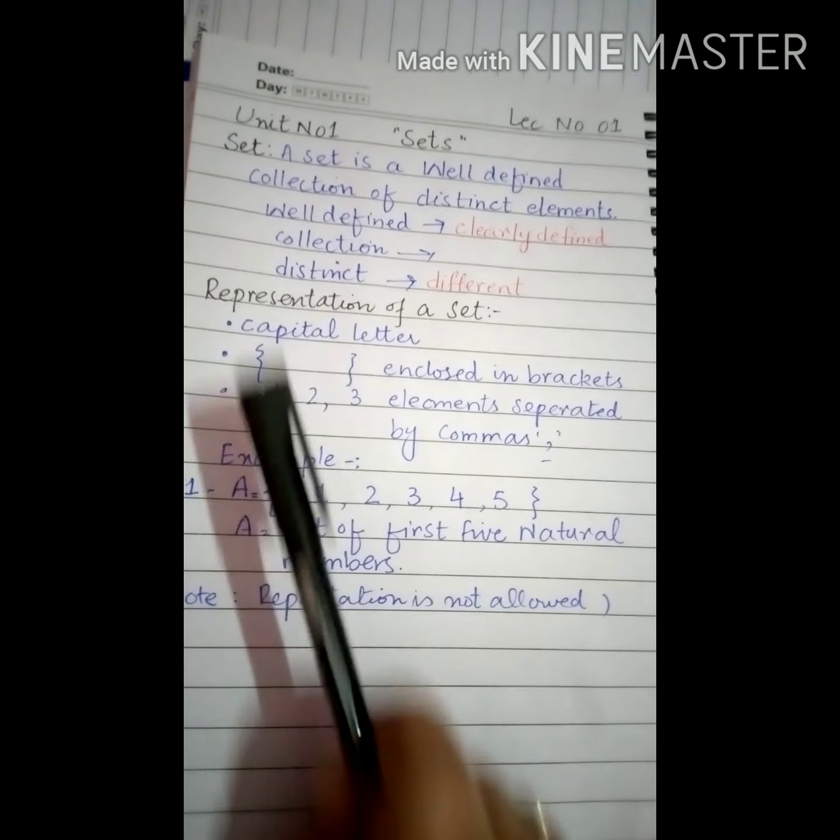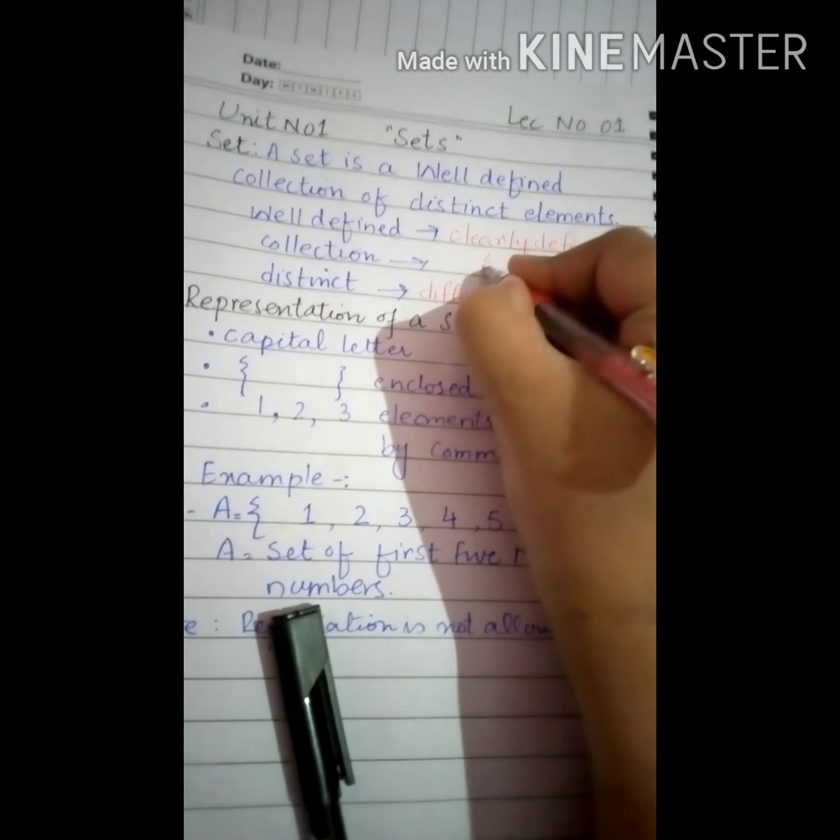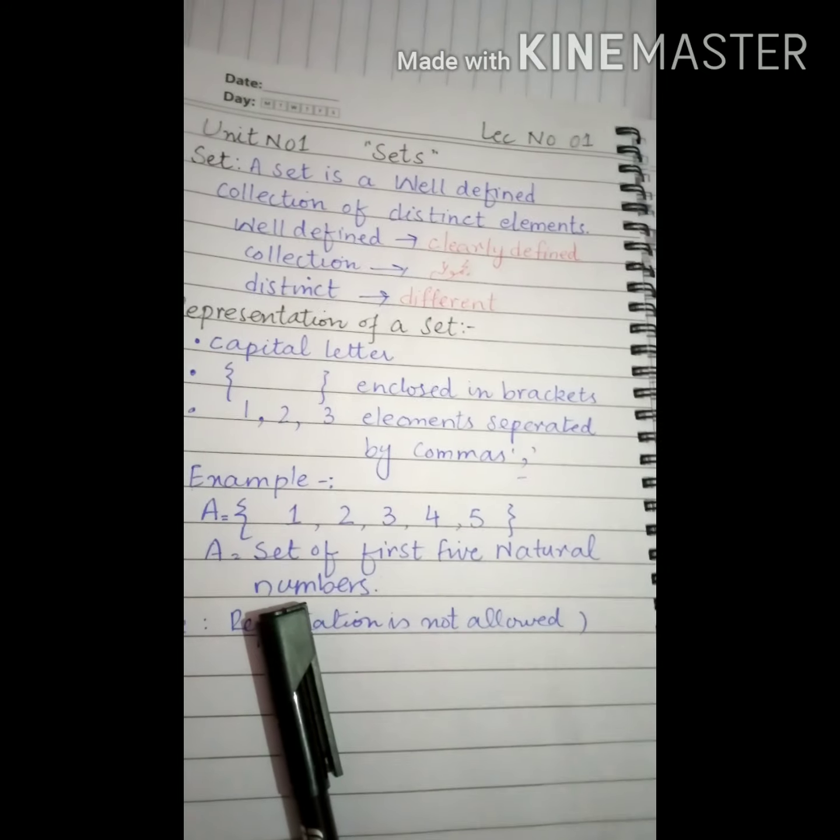What is a collection? Collection means more than one. اردو میں اس کو مجموعہ کہا جاتا ہے. اس کا مطلب ہے مجموعہ. ایک سے زیادہ چیزیں ہیں. More than one.